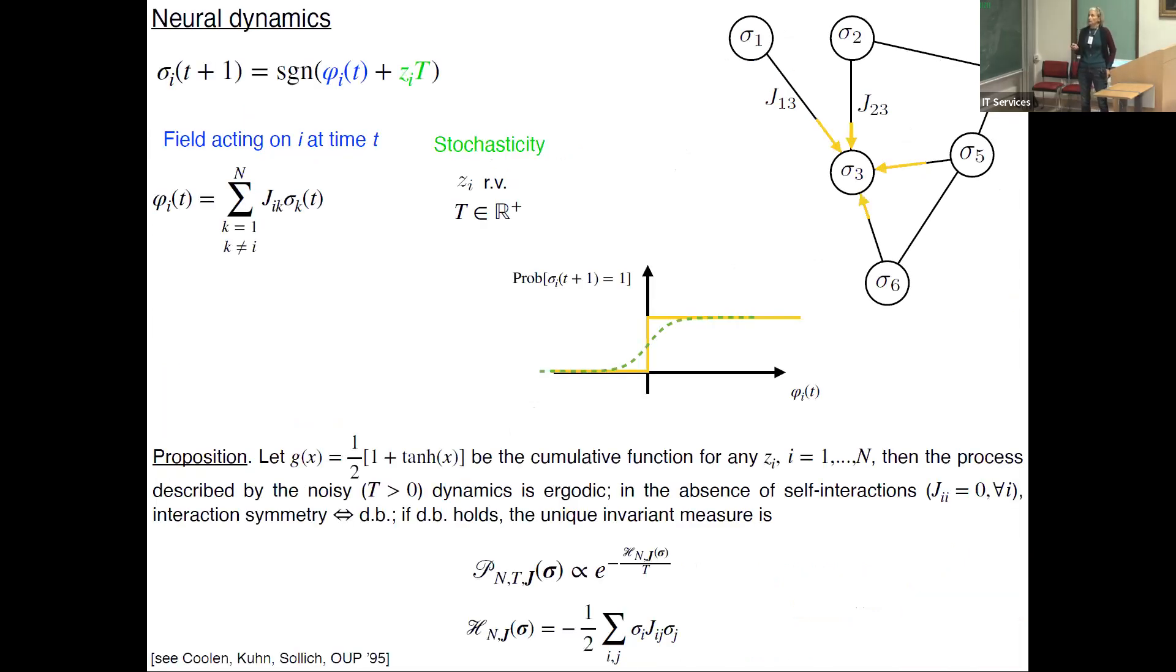Both the sigmas and the J's are dynamic random variables, but they live on different time scales - the sigmas are much faster than the J's. In the following I will take the J's as quenched, as frozen, and I will just focus on the dynamics of the sigma. Here is the evolutionary rule for the state of neuron i at time t+1, which depends on the state of neurons at the previous time. This phi is the field acting on neuron i at time t and it is determined by the state of the neighboring neurons, and then there is also a stochastic contribution.